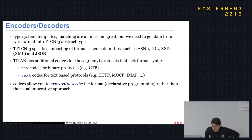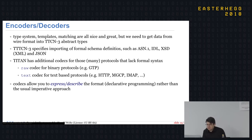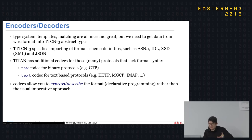Jetzt habe ich abstrakte Datentypen – aber wie encodiere oder dekodiere ich die? TTCN-3 hat in der Sprachspezifikation schon beschrieben, wie man gängige Notationen importieren kann: Was in ASN.1 spezifiziert ist, kann man einfach importieren, und der TTCN-3-Compiler kümmert sich um das Encoding-Scheme. Gleiches gilt für IDL, XML-Schema-Definitions oder JSON-Schema-Definitions – man muss also keine Encoder und Decoder schreiben.